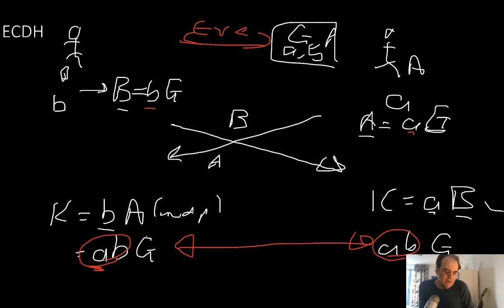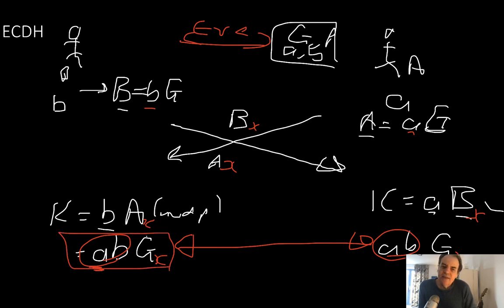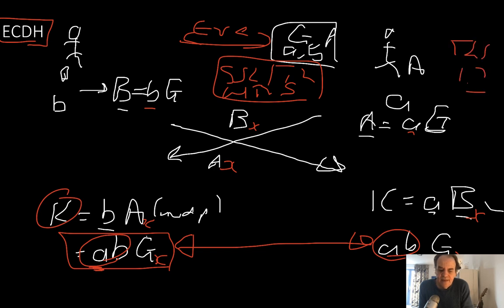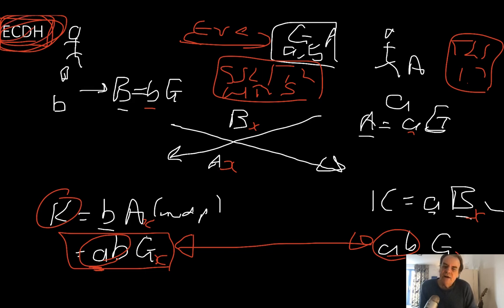We could just take the x value of the resulting point, convert it, take that x point for our key and hash it into the size of key we actually need. Elliptic Curve Diffie-Hellman is almost the default now when you use something like SSL/TLS — certainly for TLS 1.3 this is probably the only show in town for key generation.